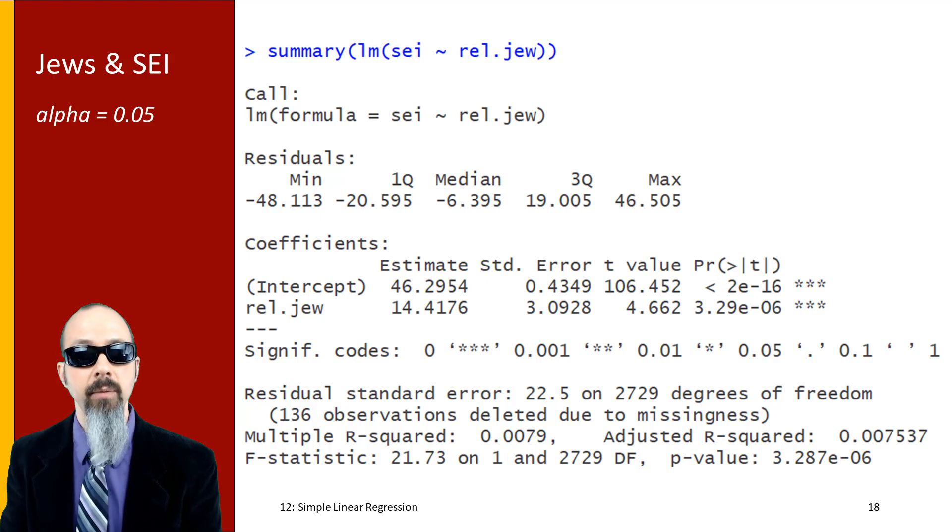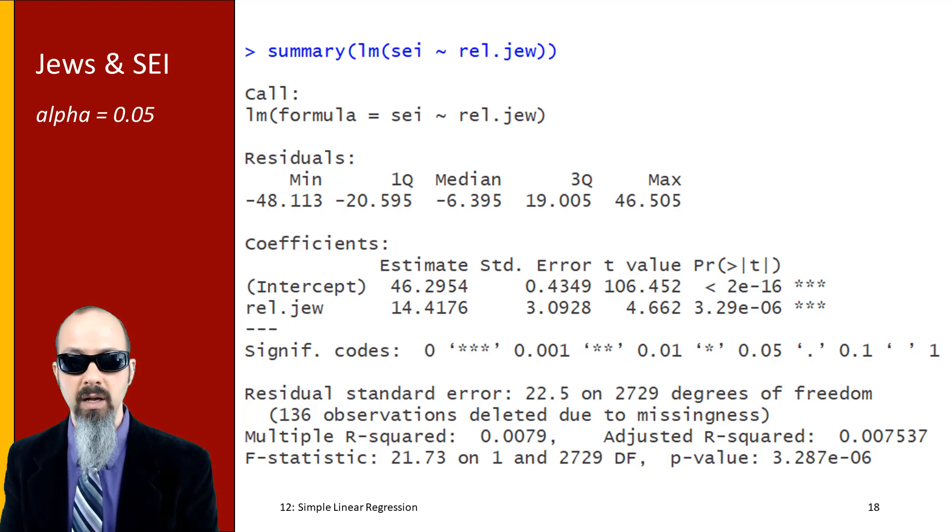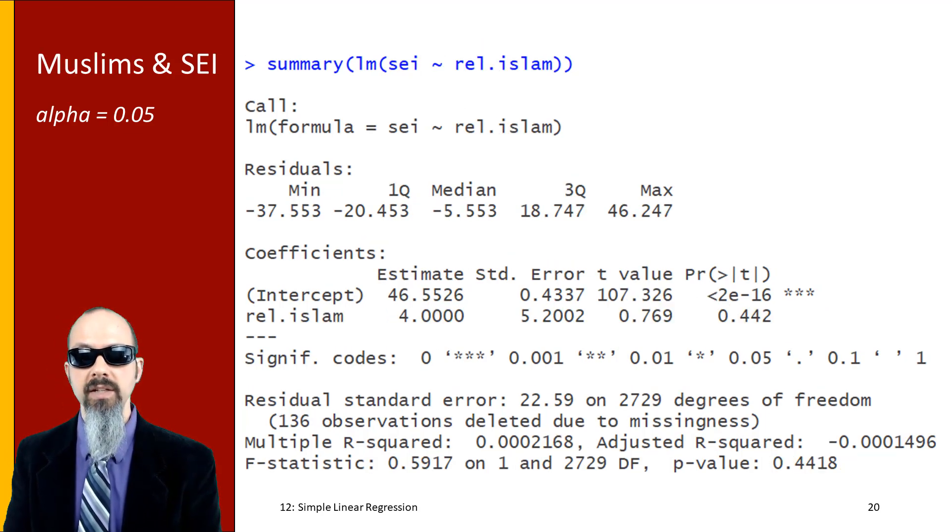Let me say that one more time: identifying as Jewish corresponds to an increase of 14.4 on the socioeconomic index compared to all other religious groups on average. That intercept is if you are not identifying as Jewish. The combined amount of SEI from all other religious groups means that you would have an average SEI of about 46.3. And being Jewish explains a very small amount of R-squared - being Jewish itself does not do very much to explain your socioeconomic index. It's about 0.008, a very small amount.